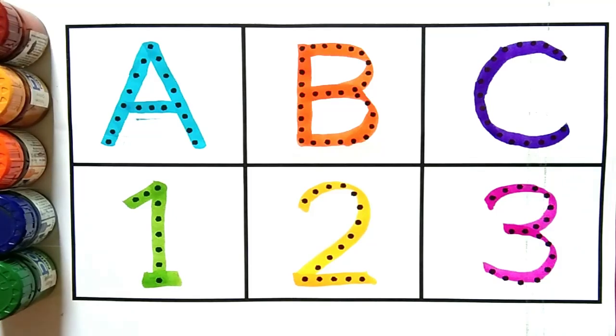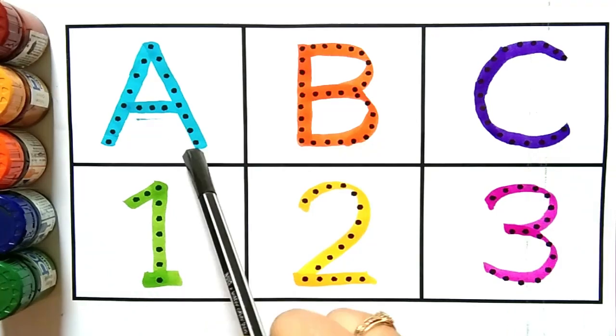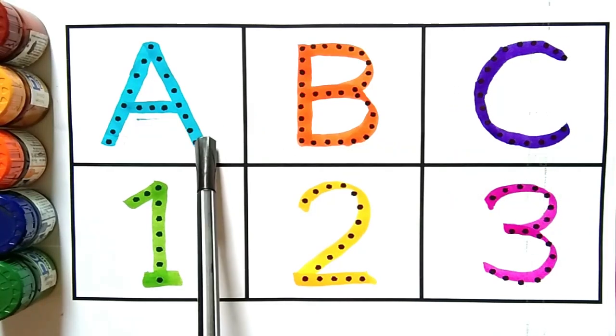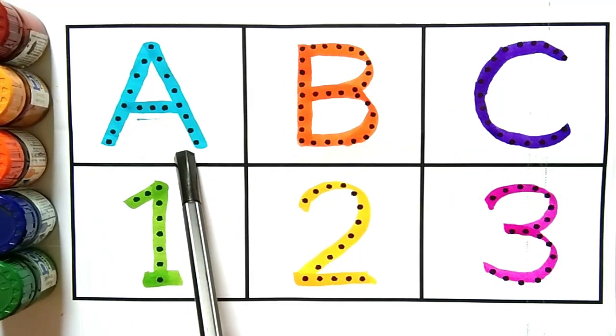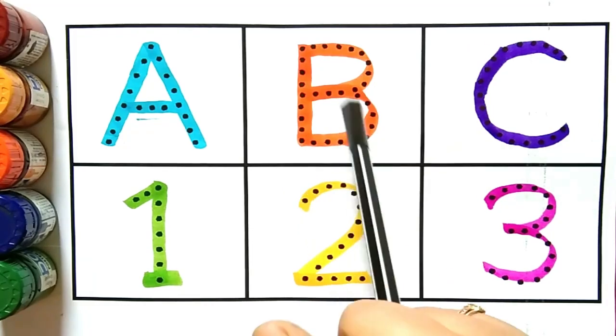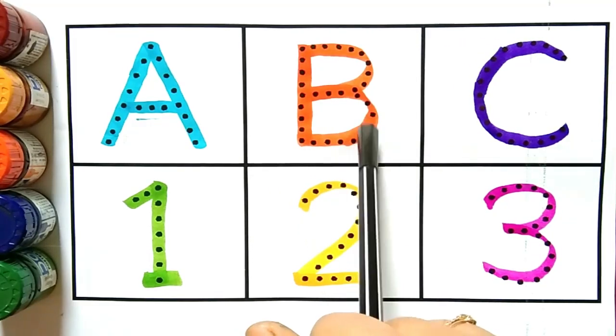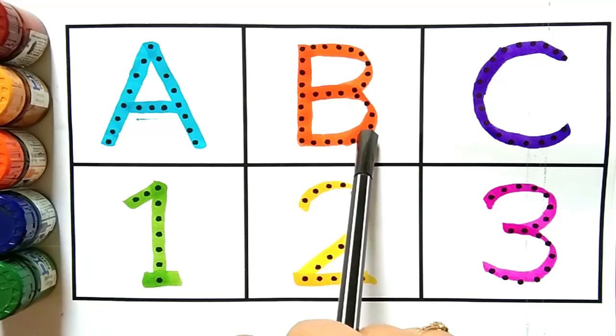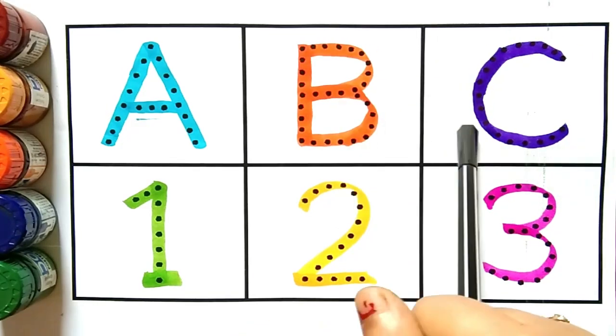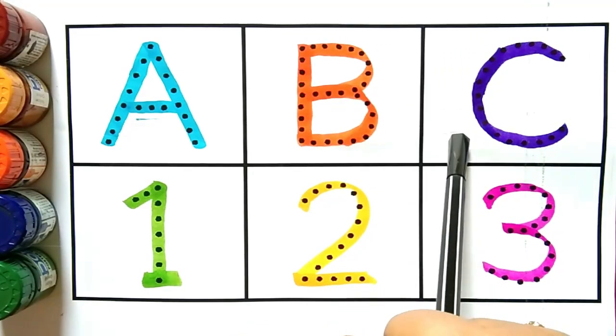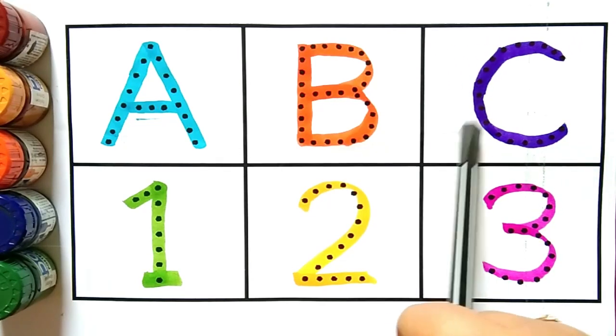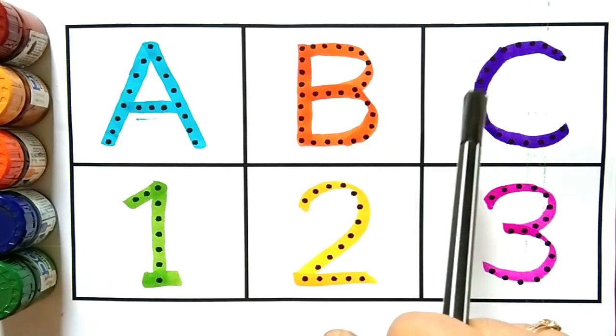Bacho phir se hum repeat karte hain. A, A for astronaut, A for kya hota hai kids, A for hota hai astronaut. A ke baad aata hai B, B for Ball, B for kya hota hai kids, B for hota hai Ball. B ke baad aata hai C, C for Cave, C for kya hota hai kids, C for hota hai Cave.